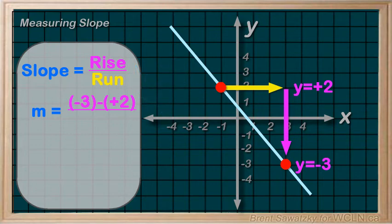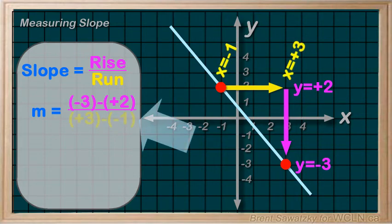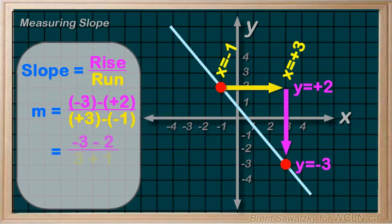For the run, we could also count our blocks or subtract the x values. Going from negative 1 to plus 3, we could determine the run as plus 3 minus negative 1. And it's time to get rid of brackets to simplify it. And we end up with a slope. And we can't reduce this at all. So, that will be our final answer. And a negative. As expected, it drops to the right.